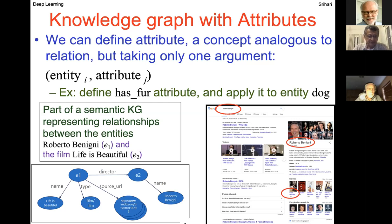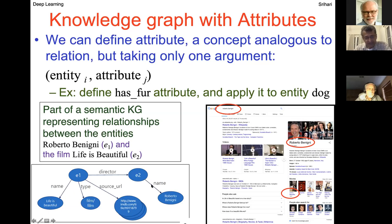Knowledge graphs can be made more general — entities can also have simple attribute pairs, not only triplets. Here is an example of a semantic knowledge graph representing relationships between entities. Roberto Benigni is one entity, the movie 'Life is Beautiful' is another, connected by the predicate 'director.' Attributes like the film's name and a source URL are also included as pairs. Knowledge graphs can thus have both triplets and pairs.